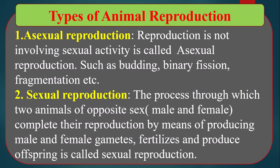The process through which two animals of opposite sex — male and female — complete their reproduction by means of producing male and female gametes, which fertilize and produce offspring, is called sexual reproduction. Male and female gametes are mandatory to produce offspring in sexual reproduction.